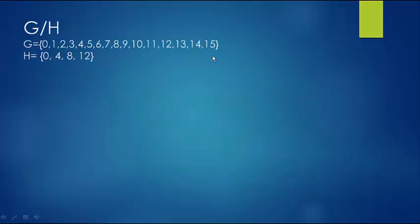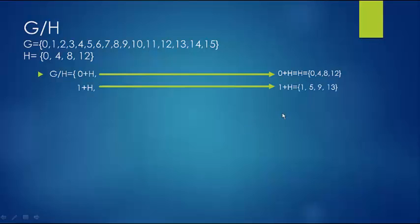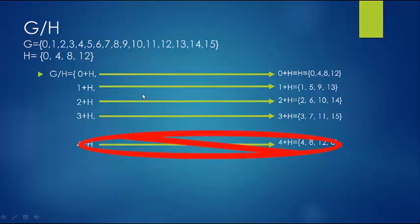So G is integers mod 16 and H = {0, 4, 8, 12}. We compute: 0 + H = {0, 4, 8, 12}; 1 + H = {1, 5, 9, 13}; 2 + H = {2, 6, 10, 14}; 3 + H = {3, 7, 11, 15}. When we try 4 + H, we get {4, 8, 12, 0}, which is the same as H, so we stop there — we have our 4 distinct cosets.